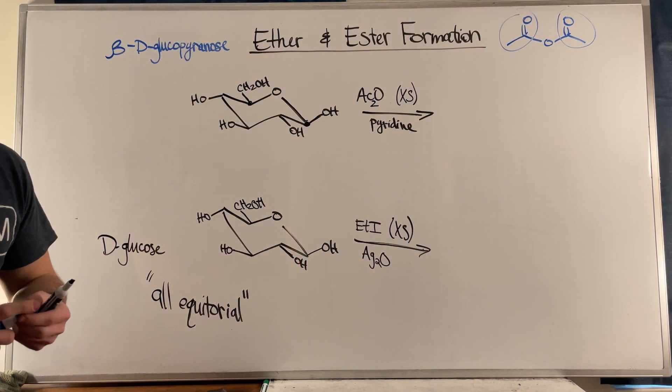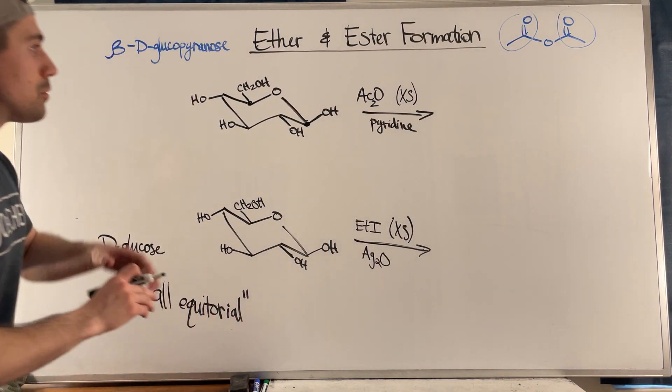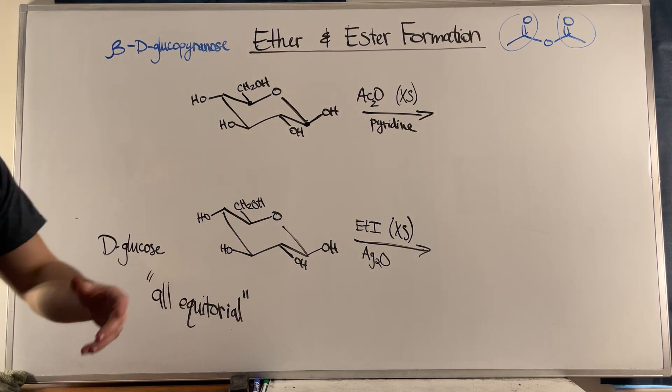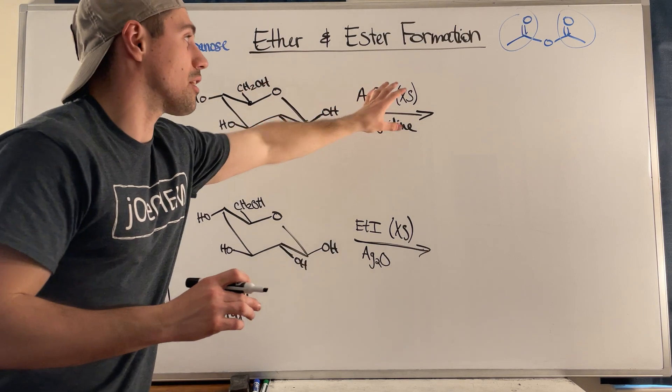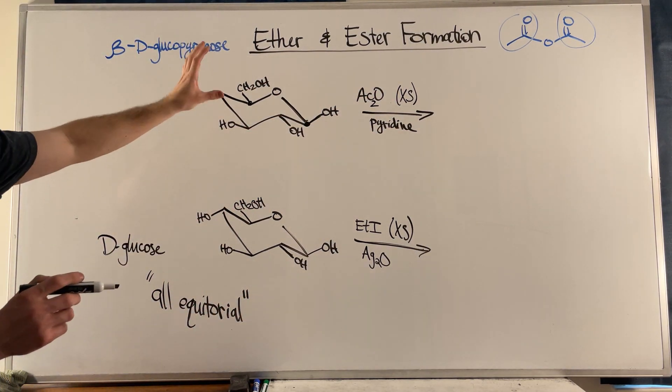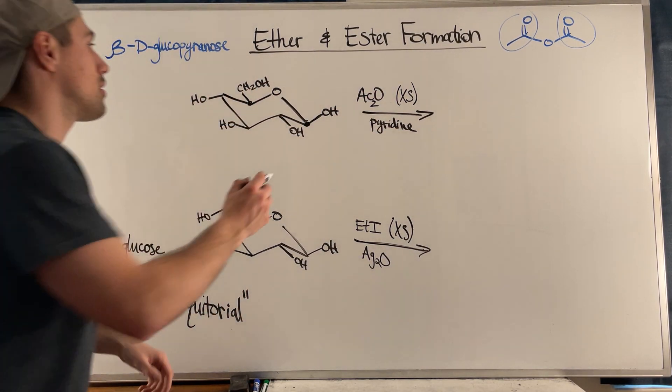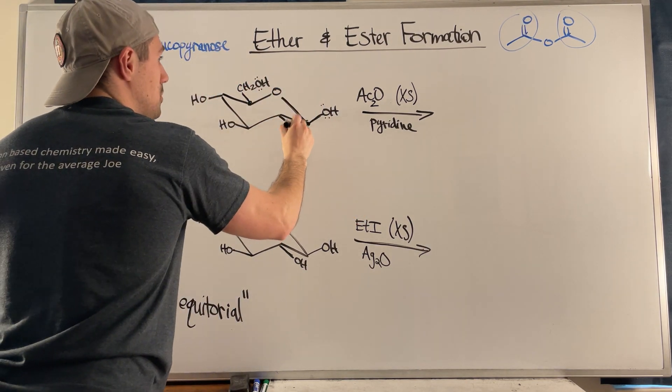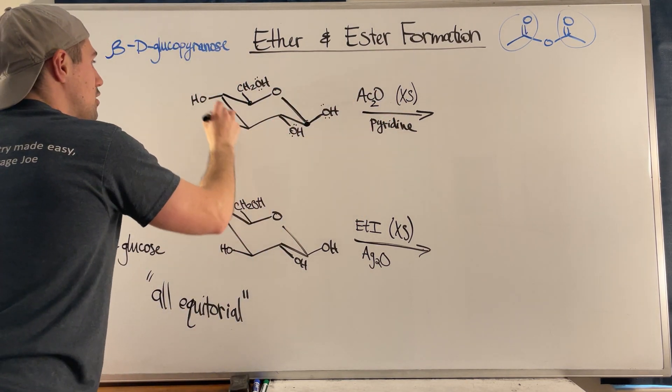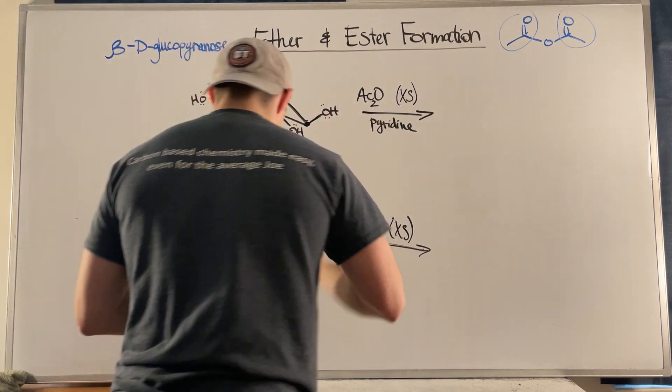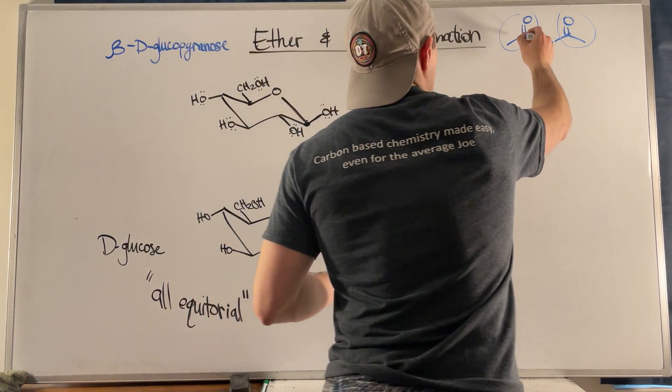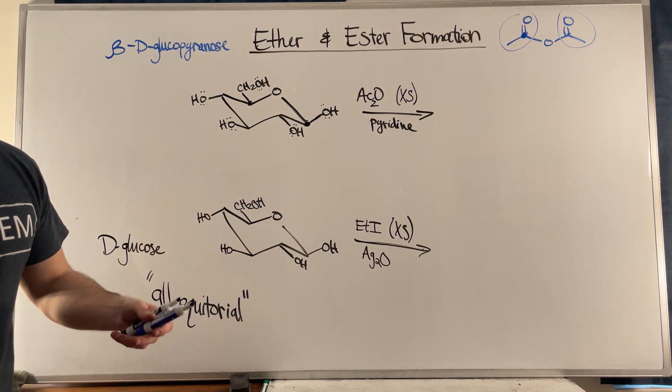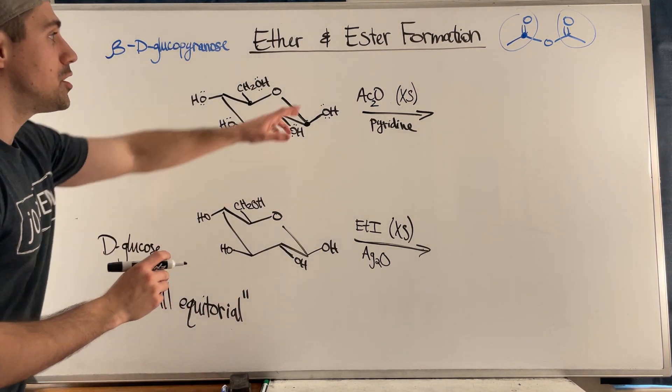Okay, so basically all we have going on here is nucleophilic attack happening in different ways. So what's gonna happen here is an addition elimination mechanism where all of these oxygens - right, all of them, because we have excess of this - they're just going to attack the carbonyl carbon in the acid anhydride.